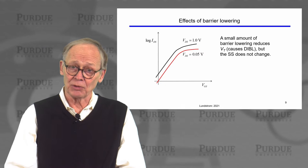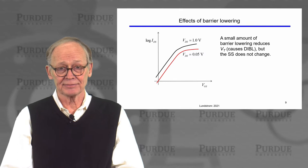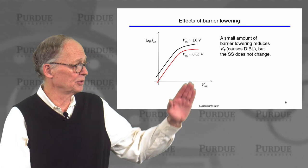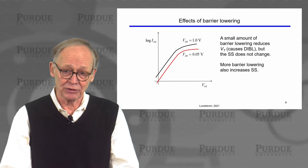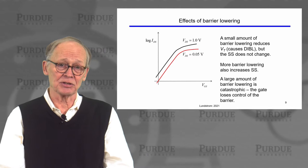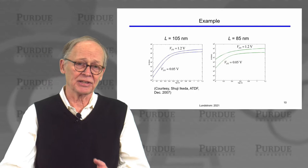If we have a small amount of barrier lowering, the threshold voltage is affected and DIBL increases, but the sub-threshold swing does not change — we just have a parallel translation of those curves. As we have more and more two-dimensional effects, we can have more barrier lowering and the sub-threshold swing can also increase. If we have a large amount of barrier lowering, things are catastrophic and we have punch-through.